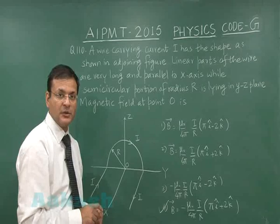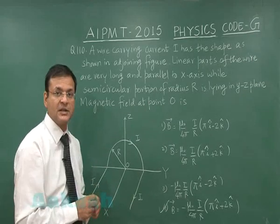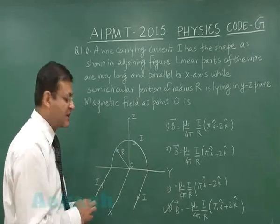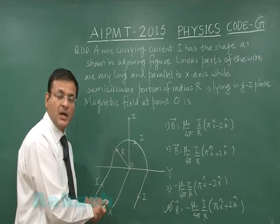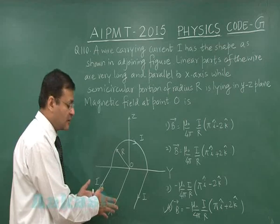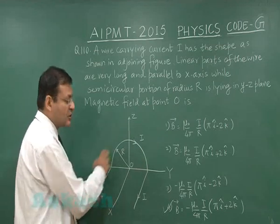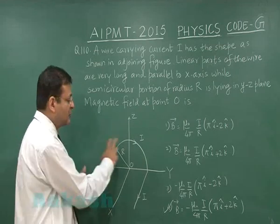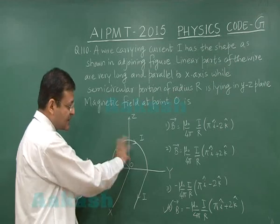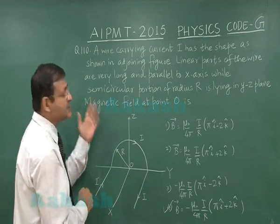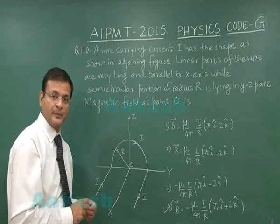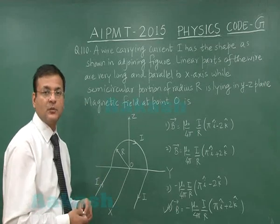If you see the entire options, you will find only the fourth option has got this kind of thing. I did not make any calculation, but still if you want to make calculation, the straight portion will have a contribution μ₀I by 2πR, and the semicircular portion will have the contribution μ₀I by 4R because it is just the semicircle. That will give you answer 4. That is the answer to question number 110.